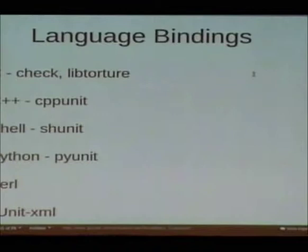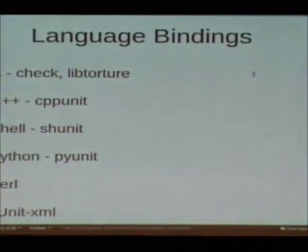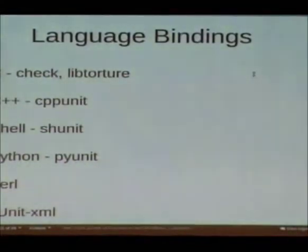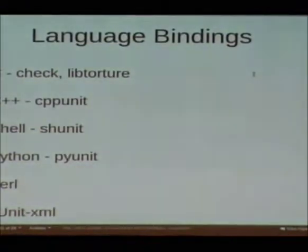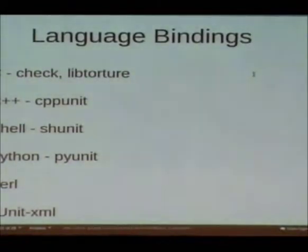For C++, CppUnit has an extensible reporter module. Subunit ships a libcppunit-subunit — link that in, tell the framework what reporters you want when you initialize, and away you go. There's demonstration code in the readme. For shell unit — not the shunit2 Google recently released, but the original shunit on SourceForge for about a decade — there's an extension point and subunit hooks into that. It's in the subunit distribution.